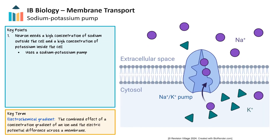The sodium-potassium pump is a key example of an exchange transporter, crucial for maintaining membrane potential in animals. This pump uses ATP to actively transport three sodium ions out of the cell and two potassium ions into the cell. This activity creates a gradient with a higher concentration of sodium outside the cell and potassium inside, establishing an electrochemical gradient that contributes to the cell's membrane potential, which is vital for nerve impulses, muscle contractions, and overall cell health.